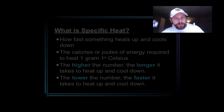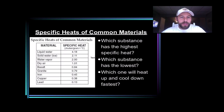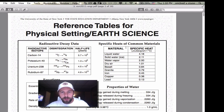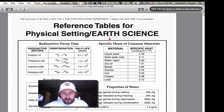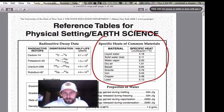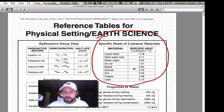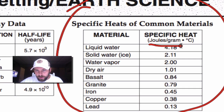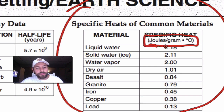Our reference table has a table of specific heats of common materials right on the cover. If we go to our reference table right here, you'll see on the cover the specific heats of common materials, right on the cover — it's nice and easy to get to. Notice the units: joules per gram times a degree Celsius, much like what we just saw on the previous slide.